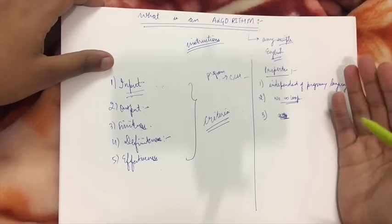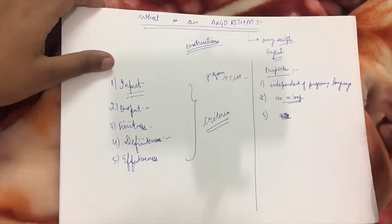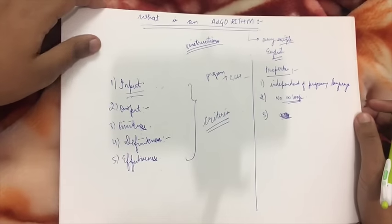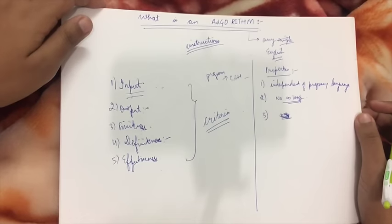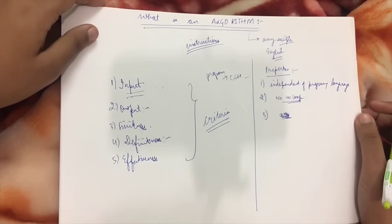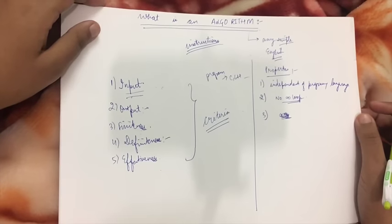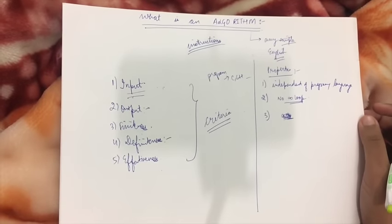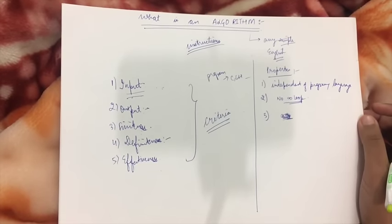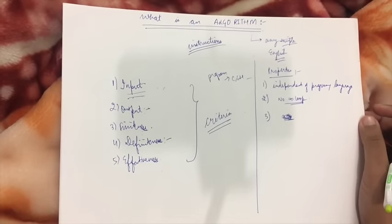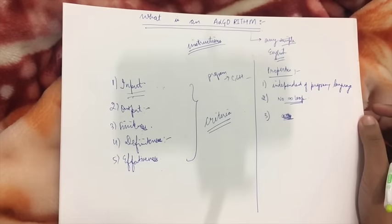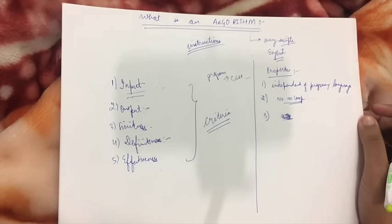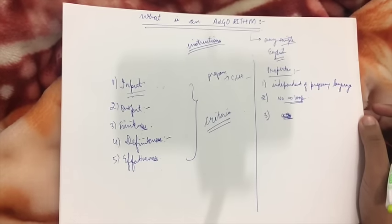The fourth property is that an algorithm is a sequence of operations performed on data that have to be organized in a data structure. Data structures, as the name suggests, are the structures that store the data, whether they are linked lists, arrays, or anything.